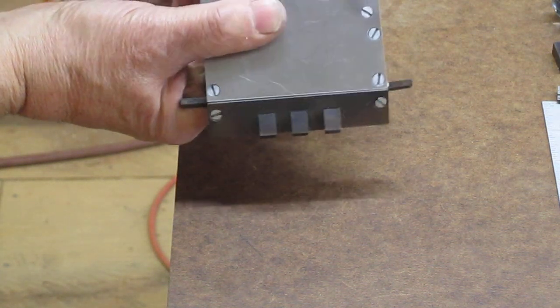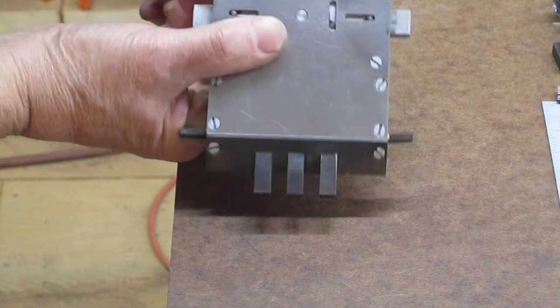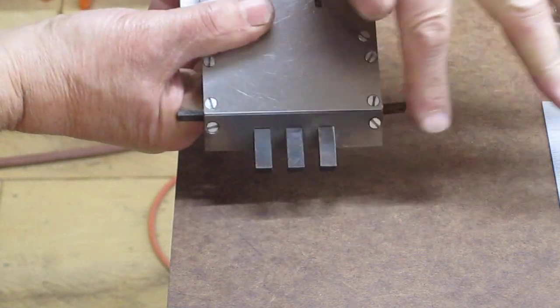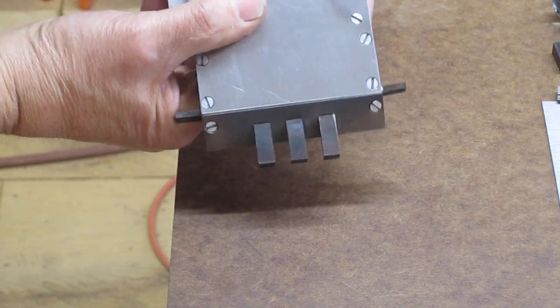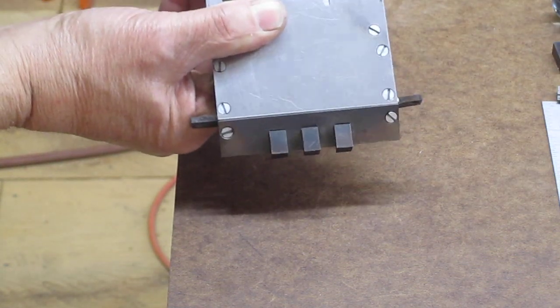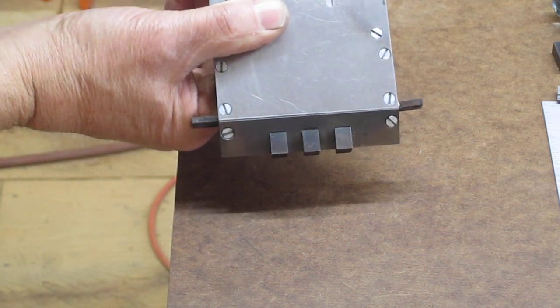And so those bolts will have to be cut back at that same angle, the same bevel angle, in order to clear the edge of the desk when the lid closes.